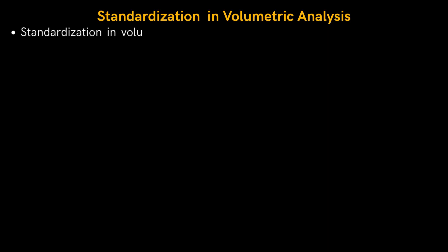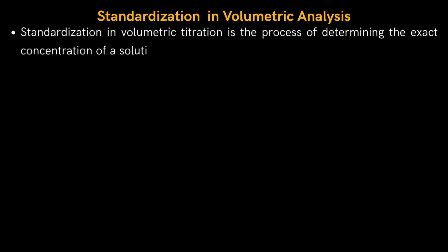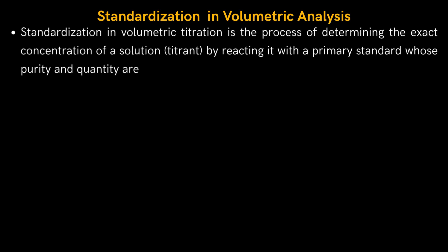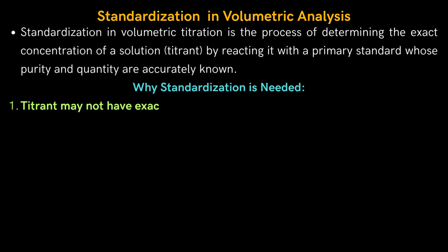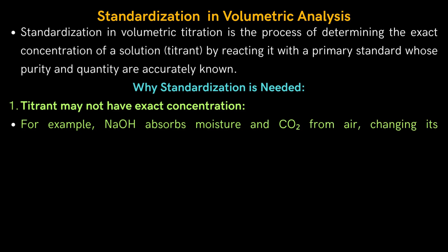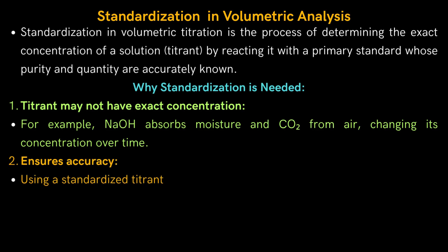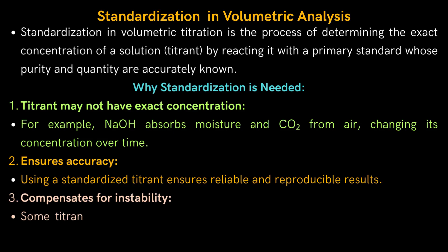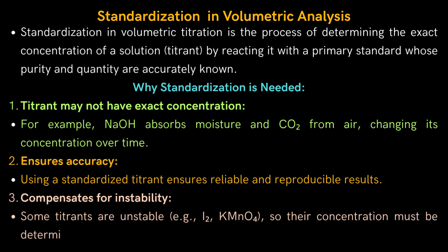Now we will understand the concept of standardization in volumetric analysis. Standardization is the process of determining the exact concentration of a solution, called the titrant, by reacting it with a primary standard whose purity and quantity are accurately known. Why is standardization needed? First, the titrant may not always have an exact concentration — for example, sodium hydroxide absorbs moisture and carbon dioxide from the air, changing its concentration over time. Second, it ensures accuracy: using a standardized titrant gives reliable and reproducible results. Third, it compensates for instability — some titrants such as iodine or potassium permanganate are unstable and their concentration must be determined freshly before use. Hence, standardization is a crucial step to ensure precision and accuracy of volumetric analysis.